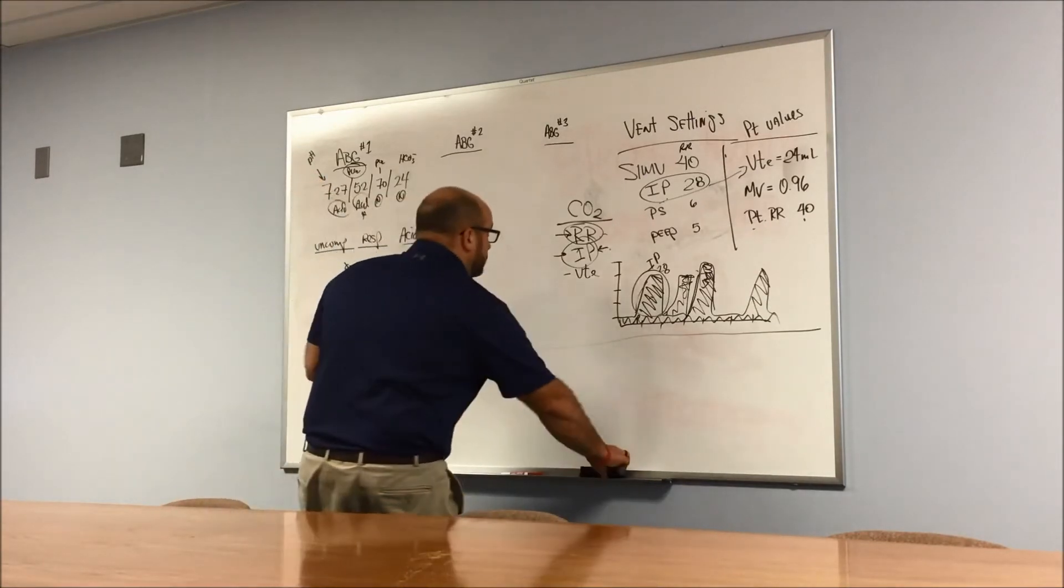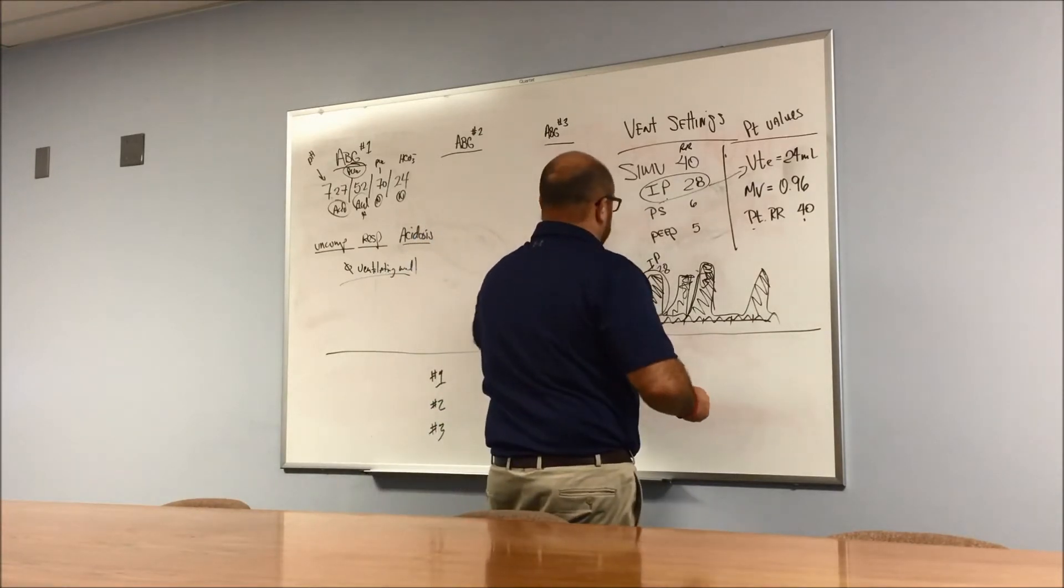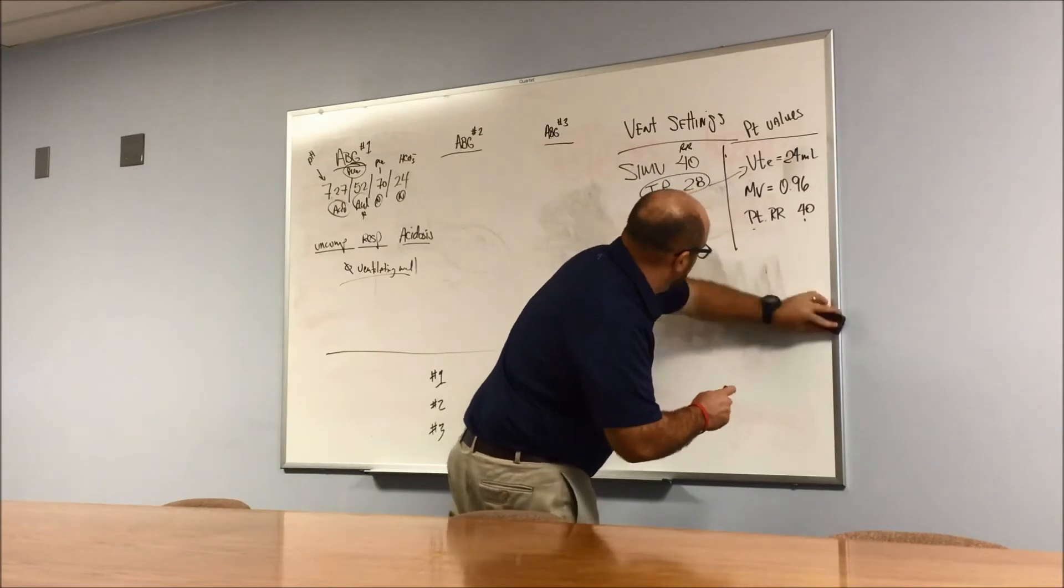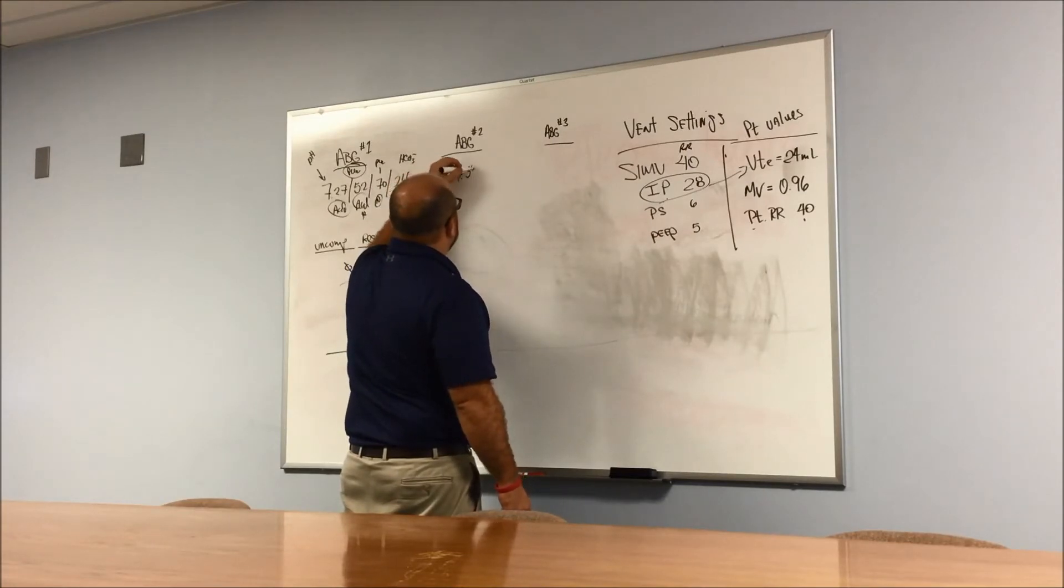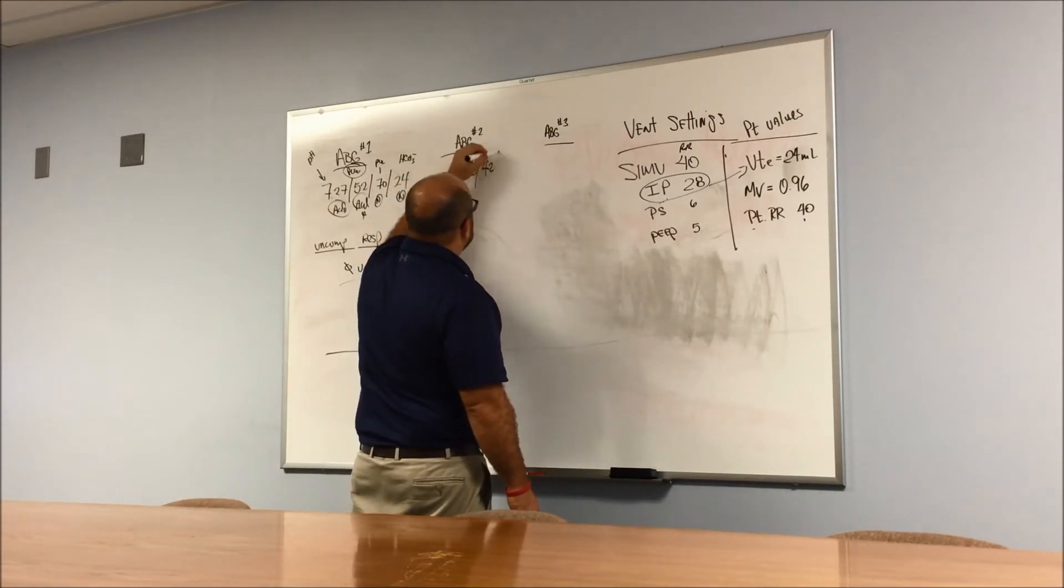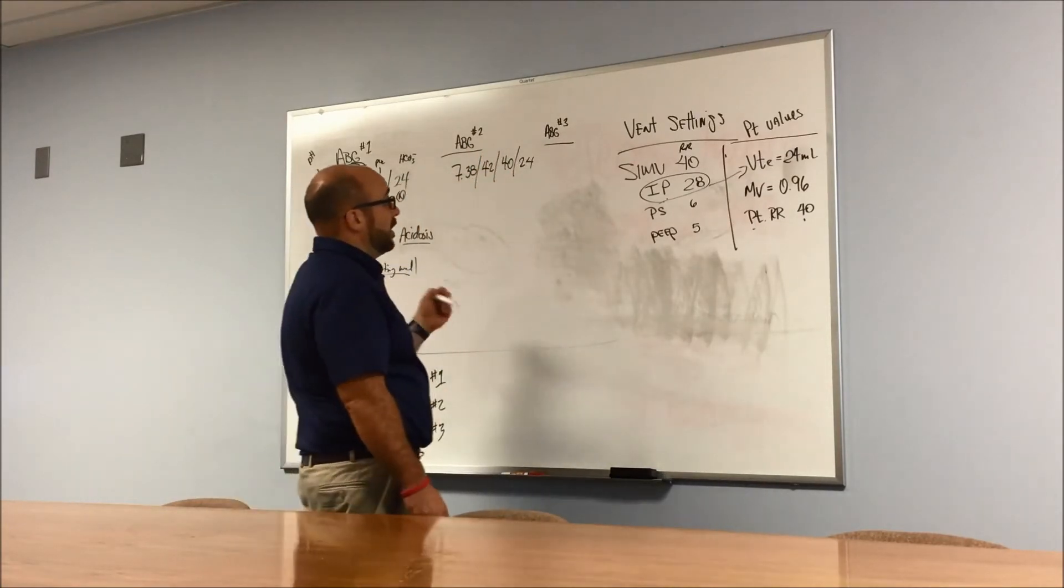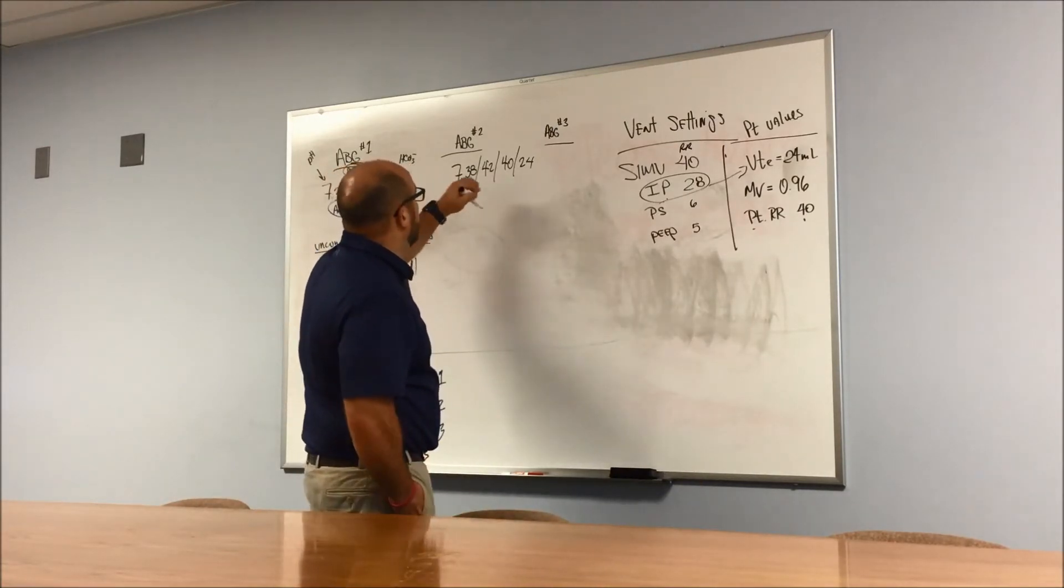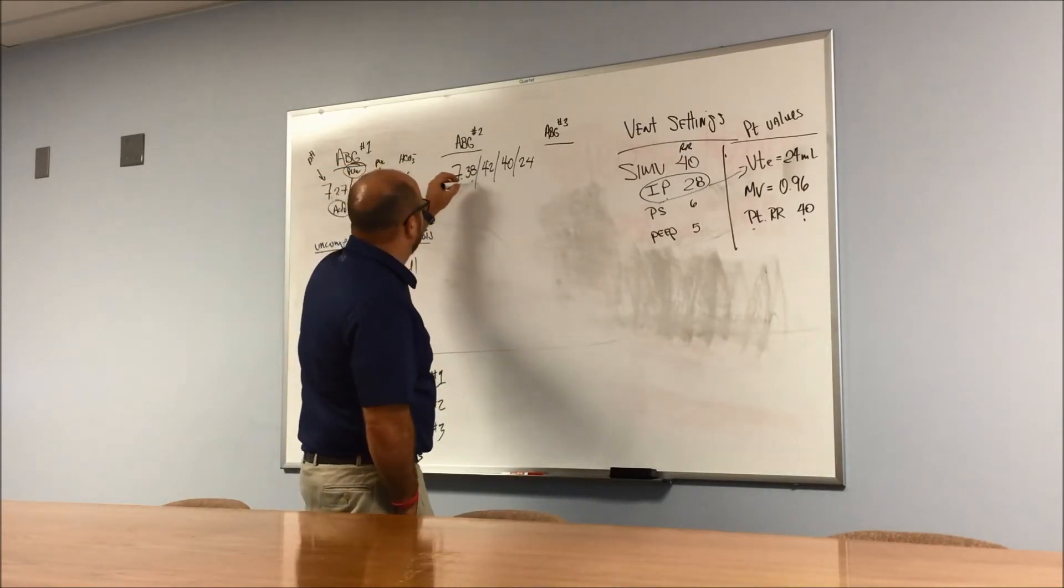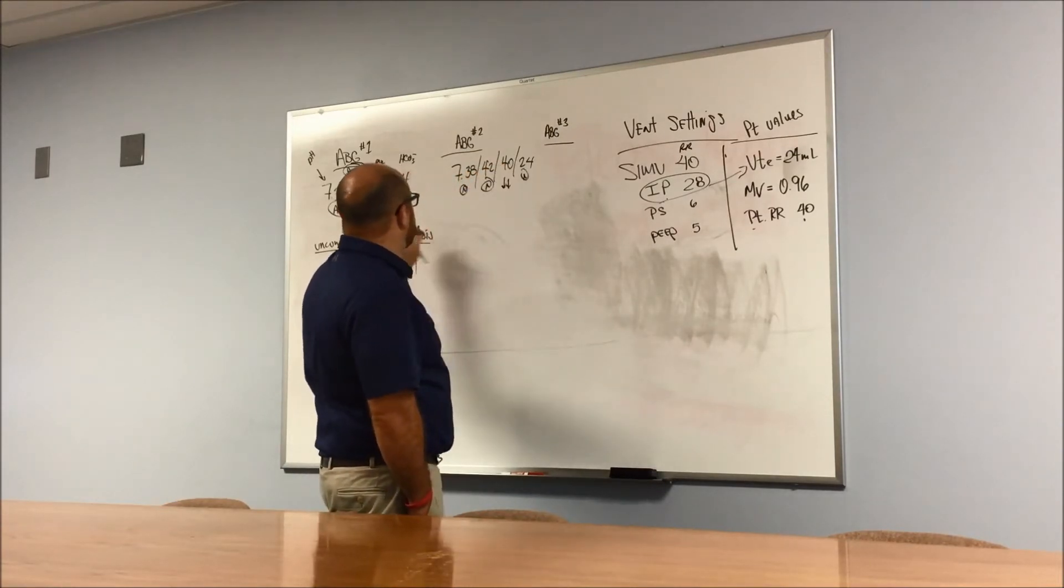Because if you have more peaks, that's more area, and you're going to decrease your CO2 faster. That's what's seen in this case, not a lot of other changes. Alright, ABG number two. We're going to say 7.38, 42, 40. This is an arterial study. I need to make sure I say that this is an arterial blood gas, so we're not a capillary gas.